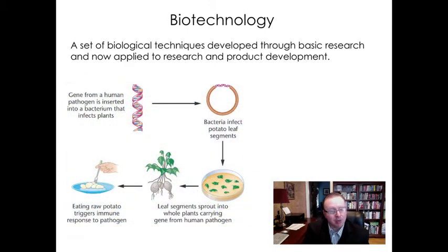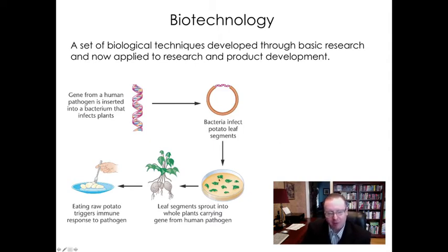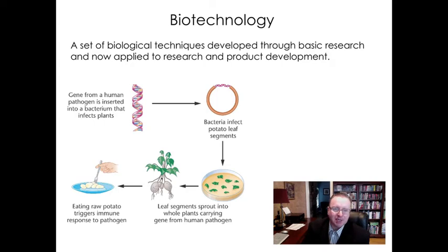Another example of biotechnology would be a product used for the betterment of mankind — to produce a medicine. This is the technique used to put a vaccine into a food product, in this case a potato. A gene is taken out of a pathogen that causes disease in humans and inserted into a bacterial plasmid, which is then put into the leaf of a plant. The plant then carries the gene for the human pathogen, so when you eat the potato your body begins to produce antibodies against that pathogen. It's a way to get natural defenses by eating a food rather than getting an injection vaccination.